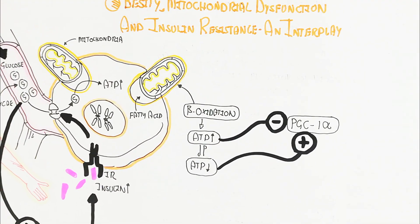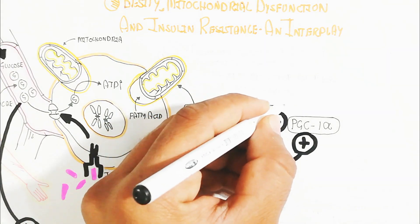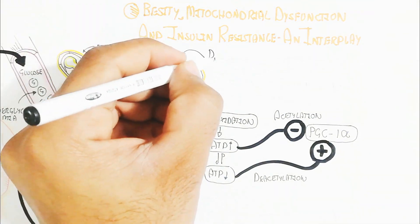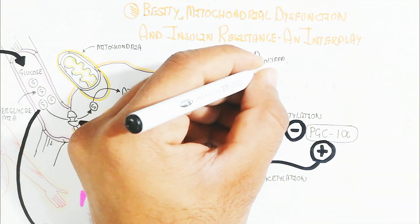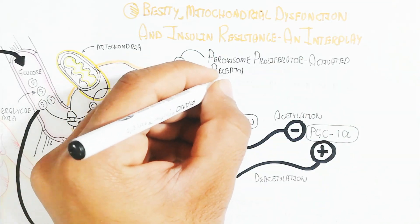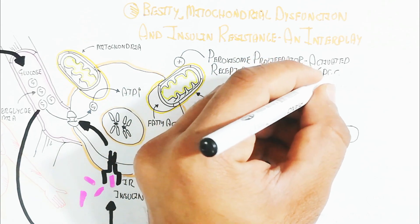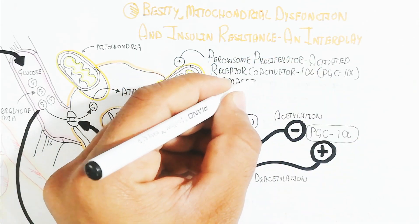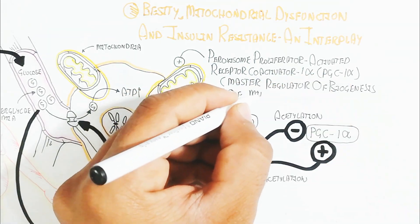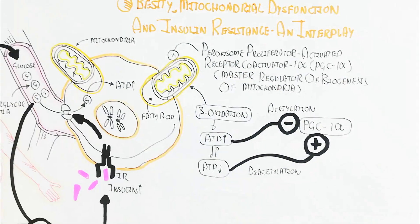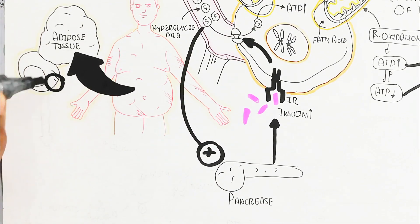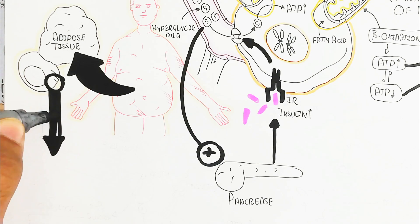The peroxisome proliferator-activated receptor coactivator 1-alpha — PGC-1α — is known as the master regulator of mitochondrial biogenesis. Whenever the number of mitochondria increases, the chances of obesity decrease. So PGC-1α is responsible for producing more mitochondria.